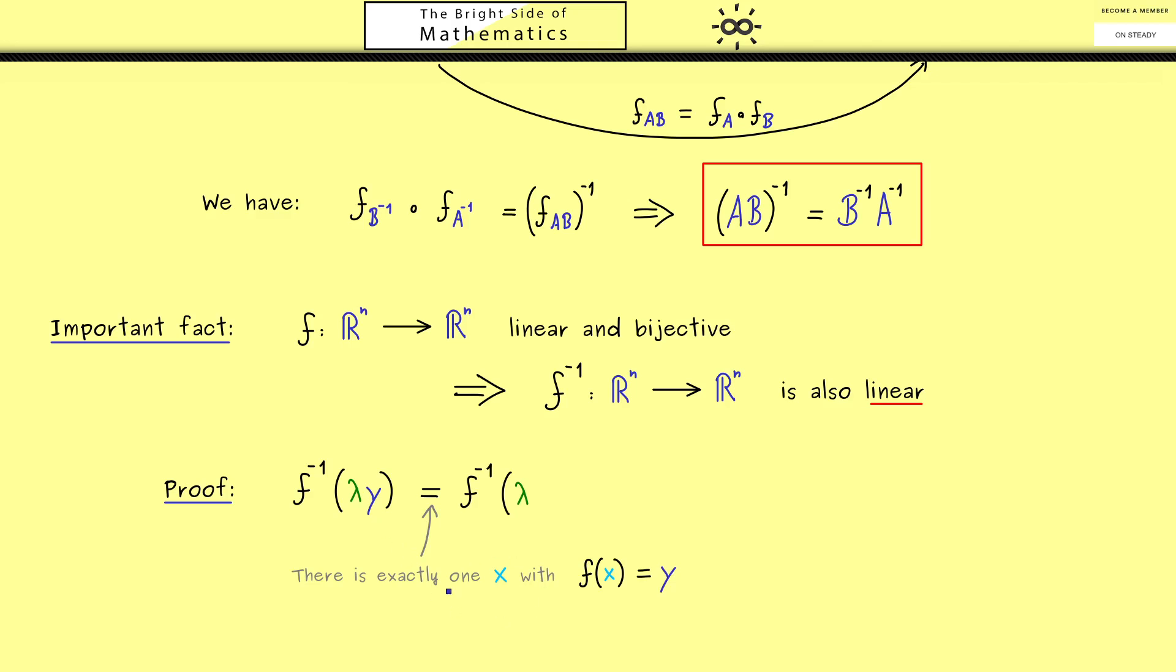However, now this means that F of x is inside our function F inverse. And therefore, in the next step, we can use that F is a linear map. This means we can pull in our scalar lambda. So we have F of lambda times x. And with this, we are almost finished because we can eliminate F inverse and F.